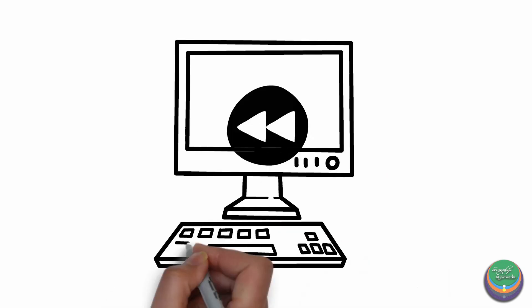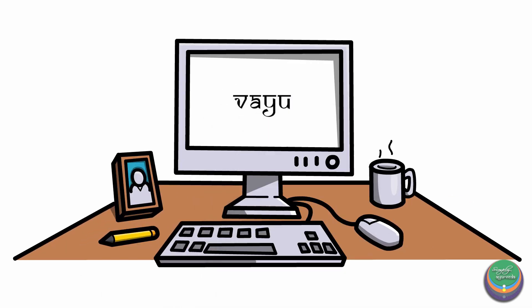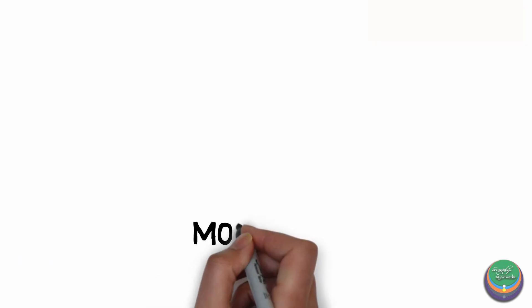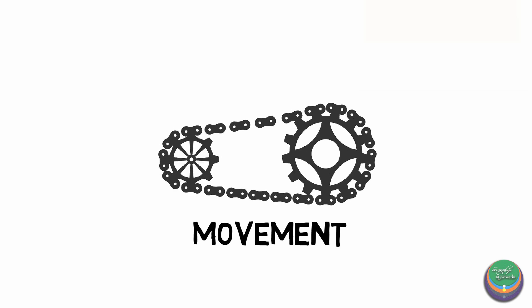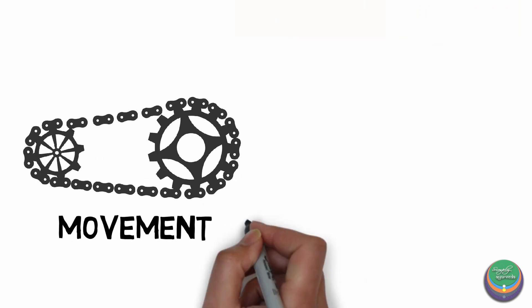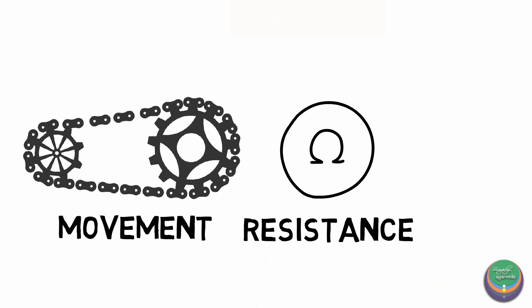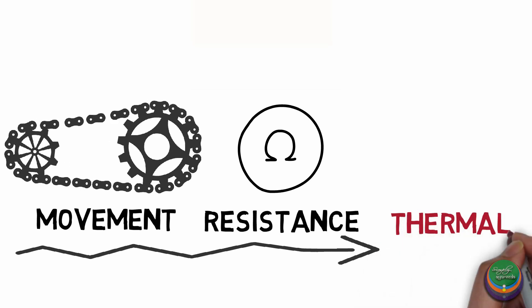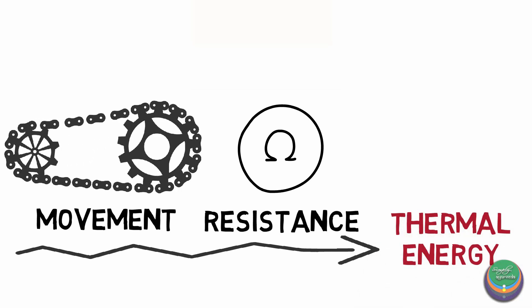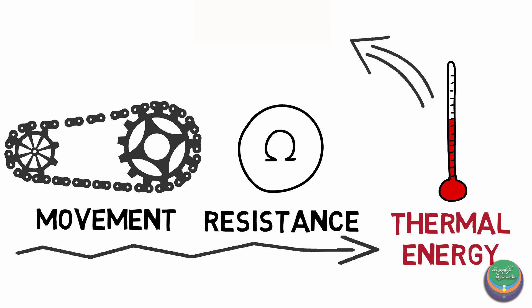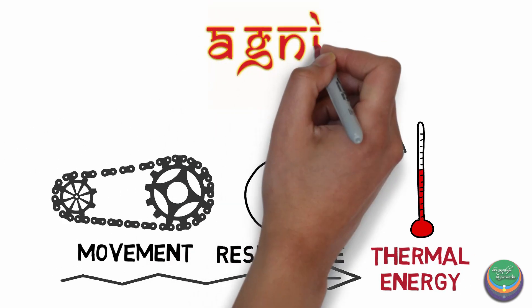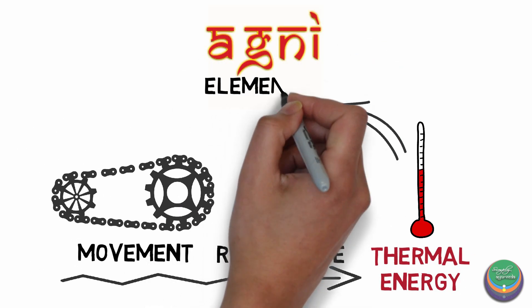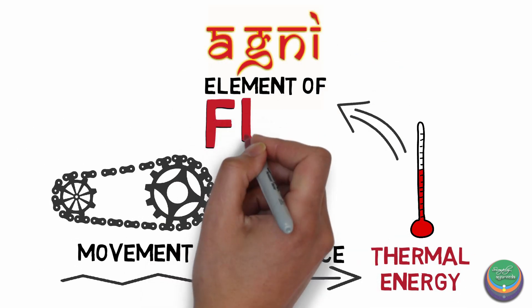Namaste. In our previous video, we learned about the element of wind, that is Vayu. We had understood that Vayu features movement. This movement is met with resistance or friction, which causes thermal energy or heat to be produced. We can consider that this heat represents the third Mahabhuta, which is Agni — the element of fire.